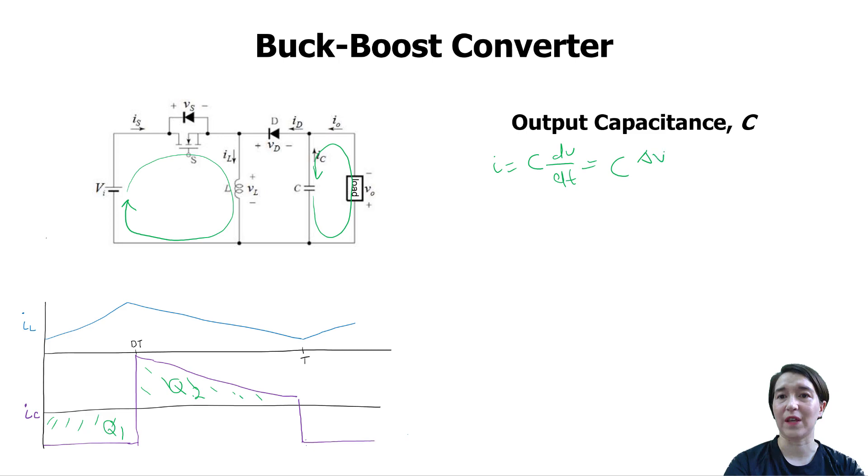Delta v is given to us, so we can consider that the specification. We know what kind of ripple we expect, so that is set separately and we know that value already. What we're trying to find is the capacitance value that meets that spec, and we're going to put the parameters for the first phase, the switch-on stage from 0 to dt.